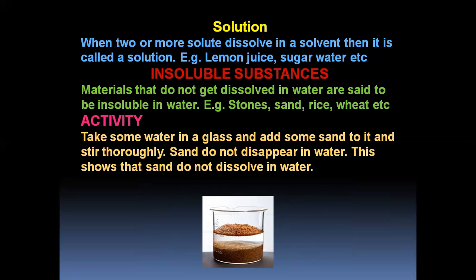Insoluble substances: Till now you studied soluble substances. Opposite to soluble is insoluble. Materials that do not get dissolved in water are said to be insoluble in water. Examples: stones, sand, rice, wheat, etc. Activity: Take some water in a glass and add some sand to it. Stir thoroughly. Sand does not disappear in water, which shows that sand does not dissolve in water. So sand will not dissolve in water.